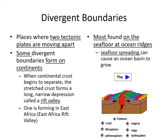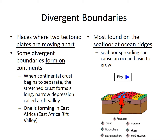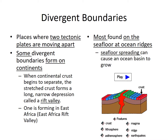So let's look at divergent boundaries. Divergent boundaries are where two tectonic plates are moving apart. Some divergent boundaries form on continents — for example, the East Africa Rift Valley. When it's within a continent, it's called a rift valley. However, most divergent boundaries are on the seafloor at ocean ridges, and this results in what's called seafloor spreading, which causes an ocean basin to grow.